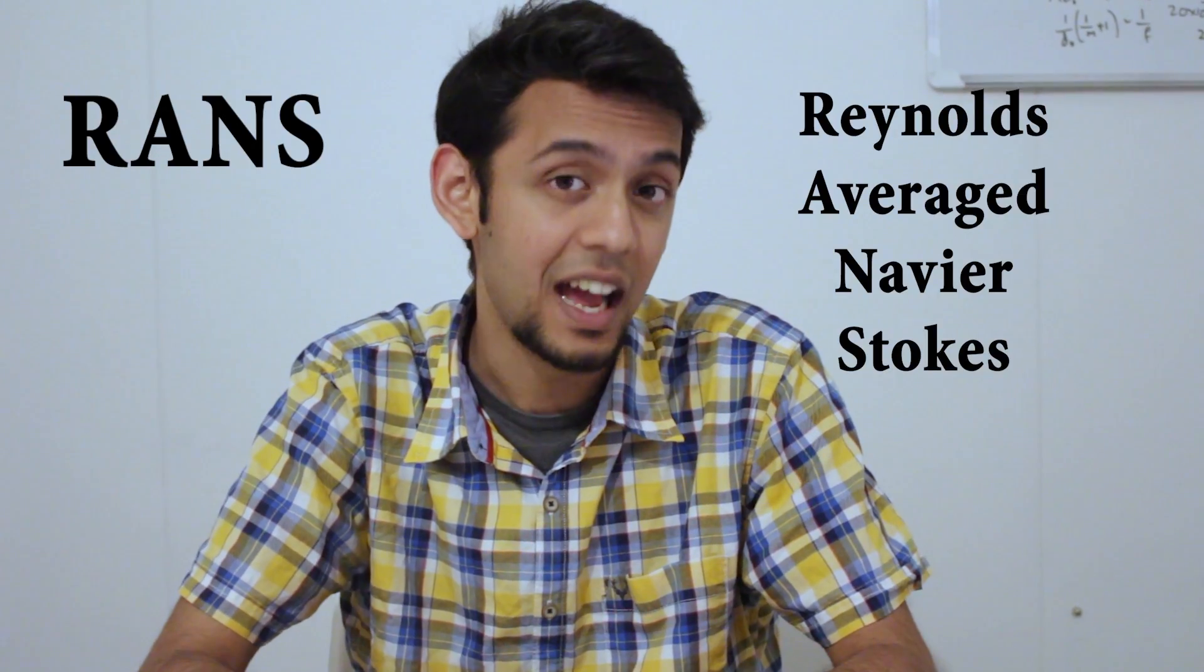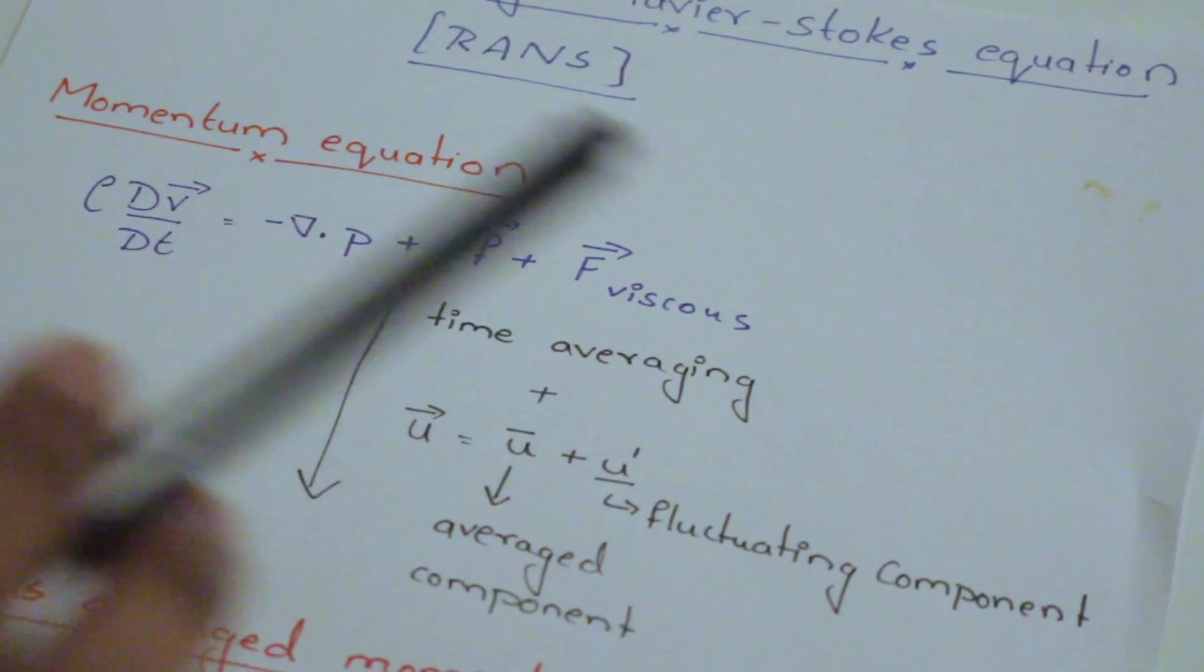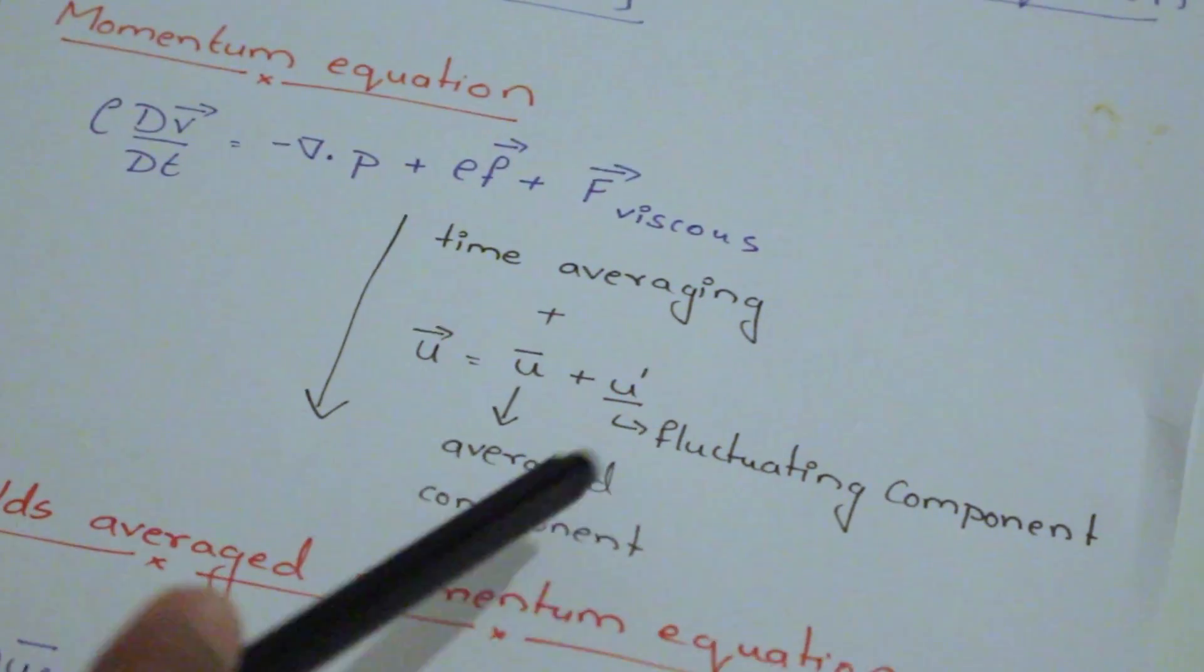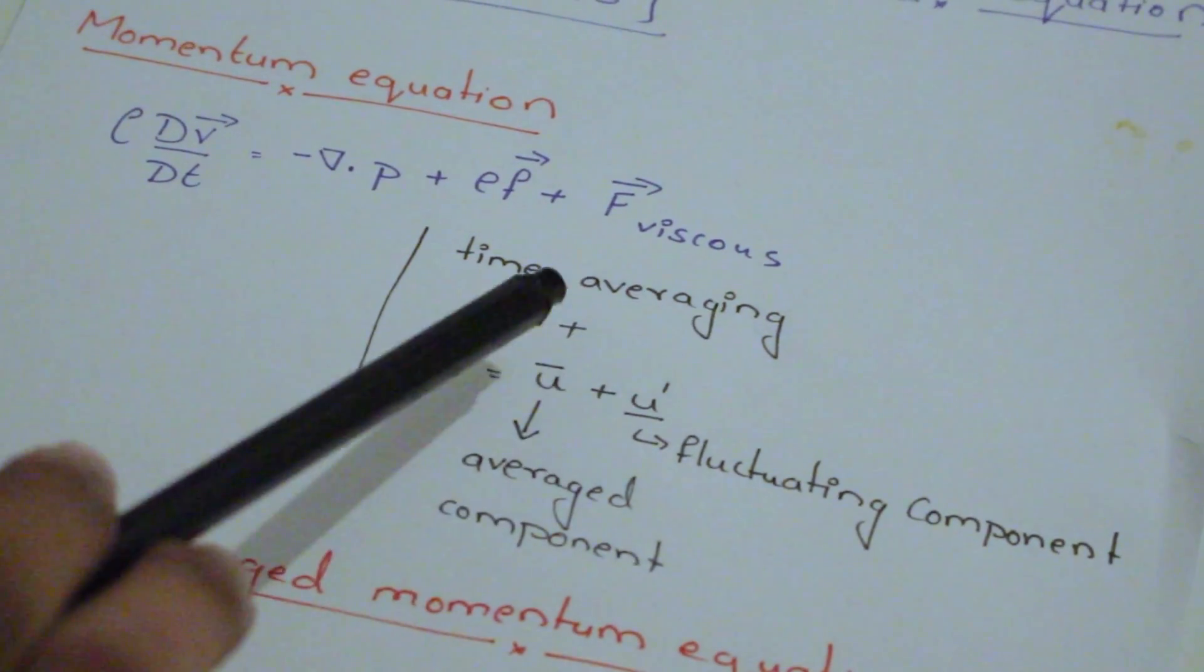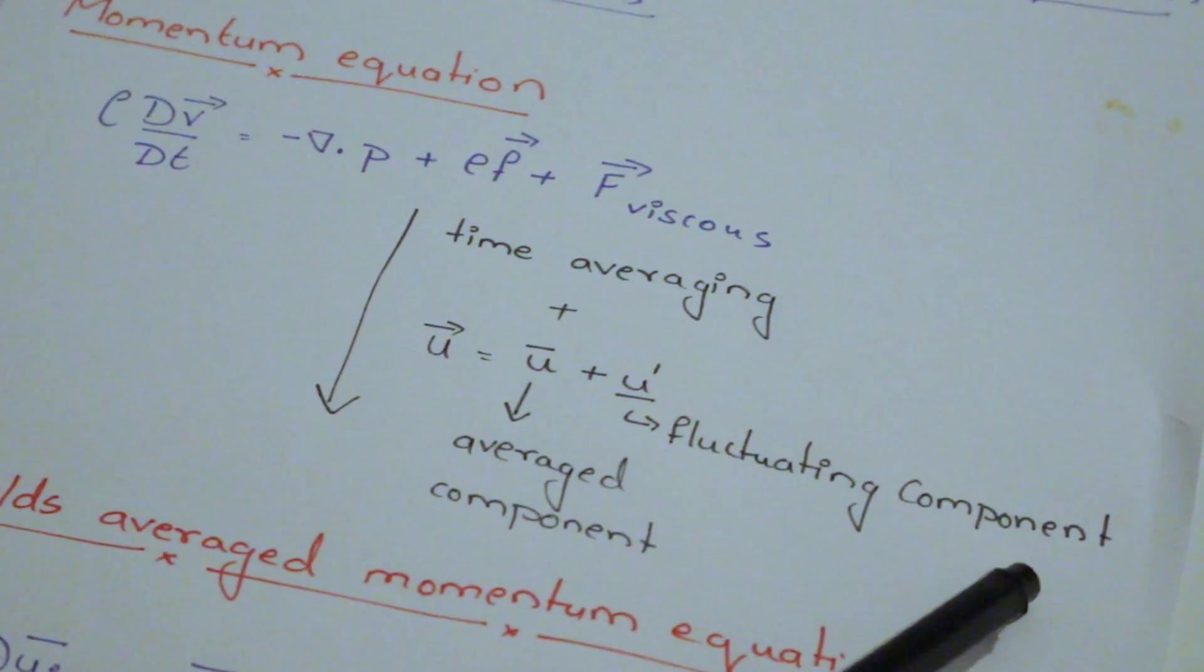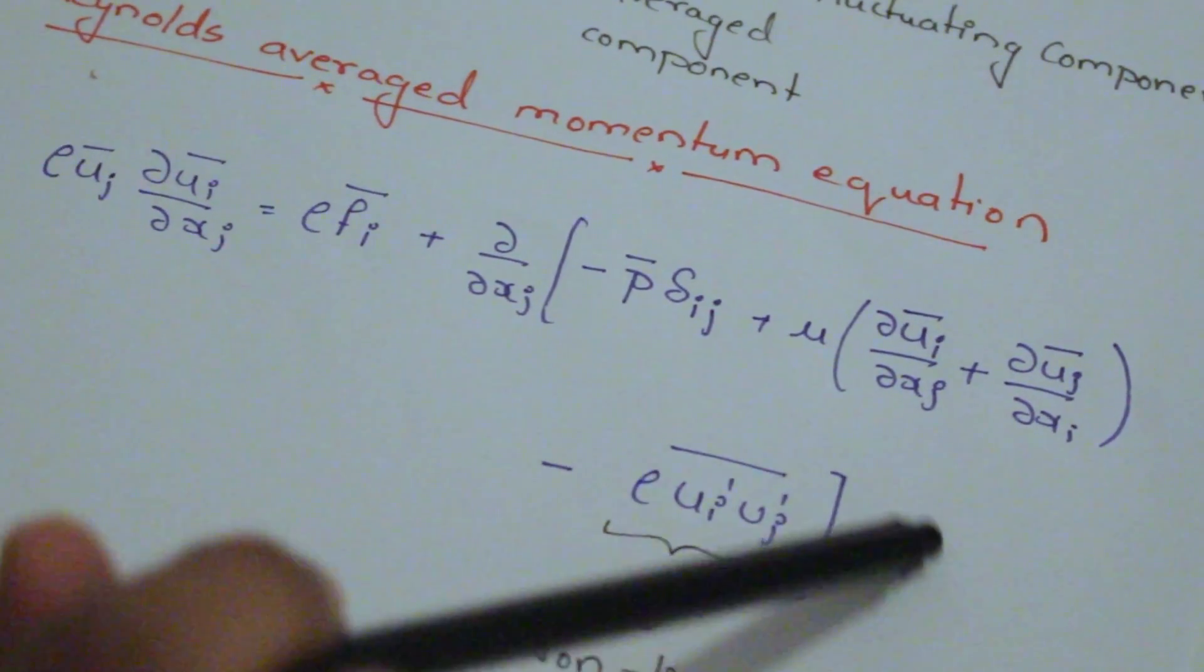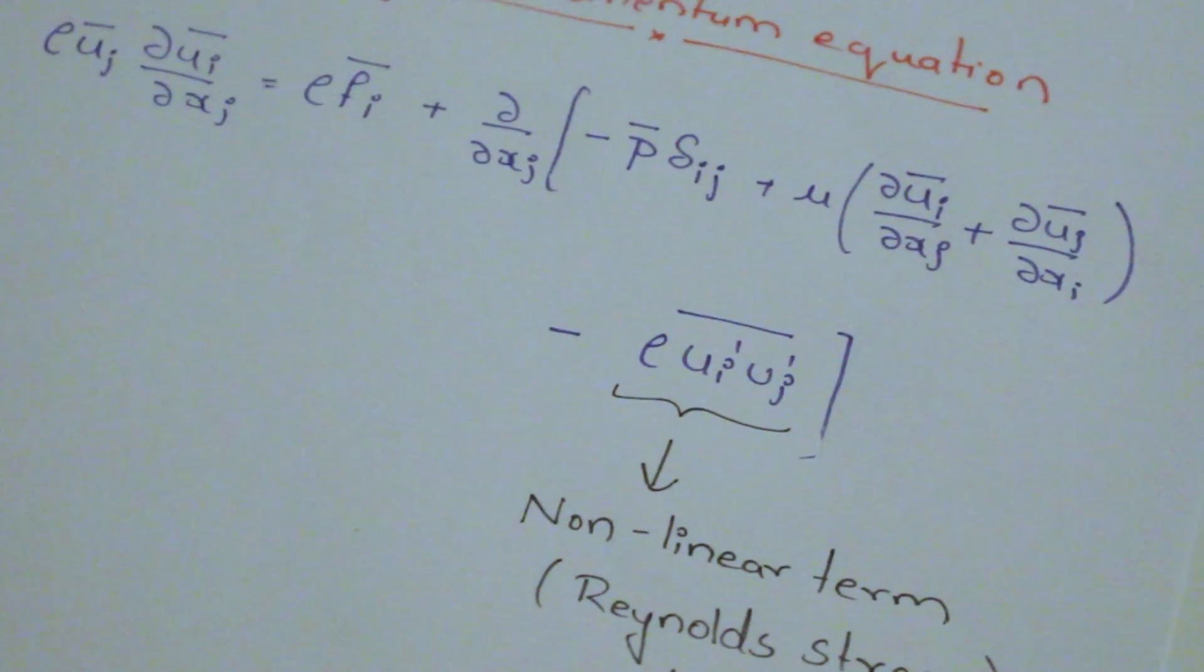And this is where techniques like RANS and LES have been implemented to overcome this problem with the Reynolds number. The Reynolds average Navier-Stokes equation or RANS are equations which are time averaged and can be used to model any fluid flow. In this method, all instantaneous quantities like velocity are decomposed into its averaged and fluctuating component. Now let us consider the momentum equation that we already described. When you apply time averaging and decompose these instantaneous quantities into its averaged and fluctuating component, we obtain the Reynolds average momentum equation. If you look closely, in this equation, there is a term which is non-linear. This term is also known as the Reynolds stress term. To be able to obtain solution, this term has to be modeled.